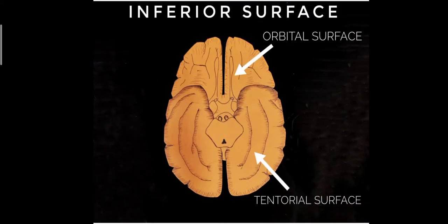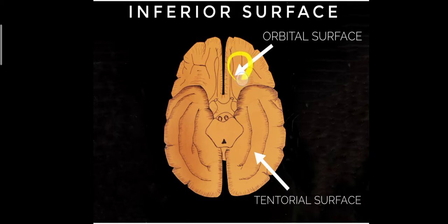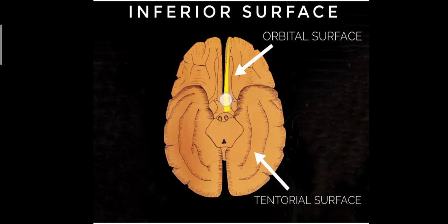If you take the inferior surface of the cerebrum, there are two surfaces: the tentorial surface and the orbital surface. As the name suggests, the orbital surface means the two eyes will be located here in this depression — that's why it is named the orbital surface. The inferomedial border lying near to the orbital surface is the orbital part of the inferomedial border, and the occipital part of the inferomedial border is also identified here.